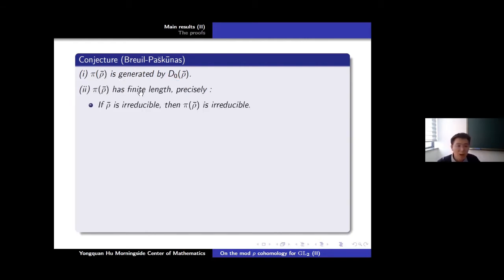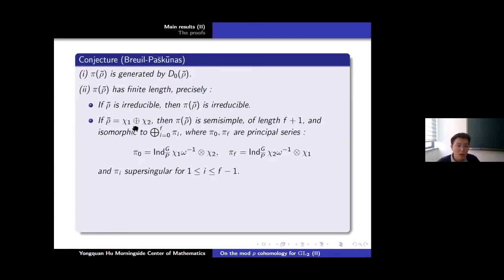The second part of the conjecture is that π(ρ̄) has finite length. Precisely, if ρ̄ is irreducible, we expect π(ρ̄) is irreducible — in fact, we expect it is a supersingular representation. If ρ̄ is a direct sum of two characters, we expect π(ρ̄) is semisimple. Its length is not 2 but f+1. In the case of GL2(Qp), you get length 2, but in general you get length f+1.